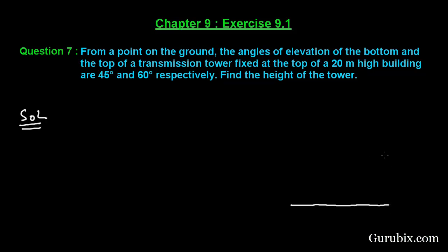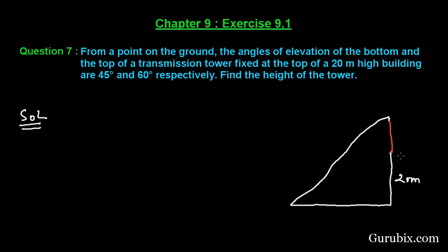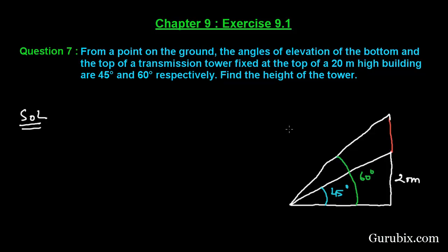First of all, let us draw a rough sketch of the figure using the information given in the question. Suppose this is the ground, and here we have a 20 meter high building, and over it we have a transmission tower. From a point on the ground, the angle of elevation of the top and bottom of the transmission tower are 60 degrees and 45 degrees respectively.